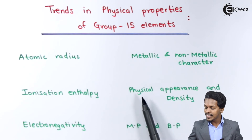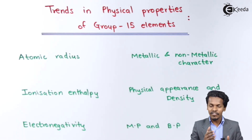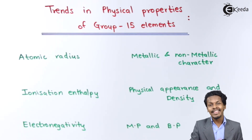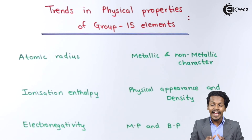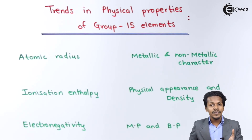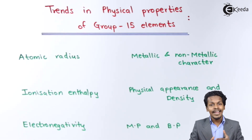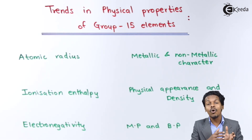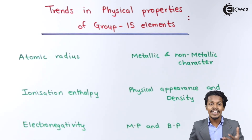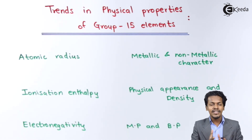Now let me talk about physical appearance and density. Nitrogen is a diatomic molecule and exists as a gas. The rest of the elements — phosphorus, arsenic, and antimony — are in solid state. From phosphorus to antimony, the elements are present in a tetra-atomic state, for example P4 and Sn4, which makes nitrogen completely different from the other group 15 elements.